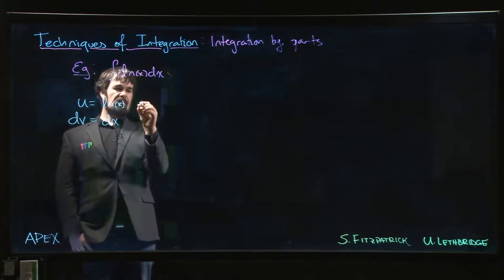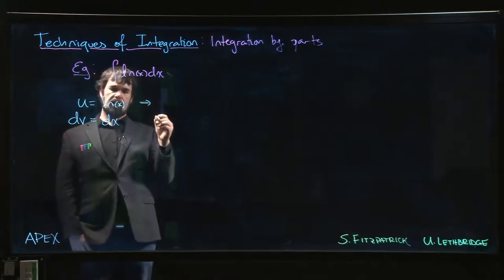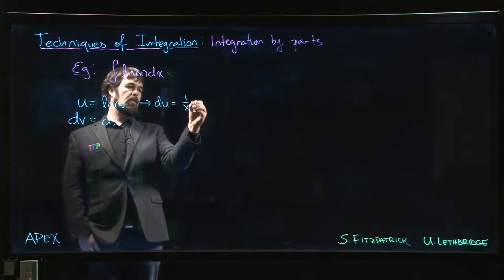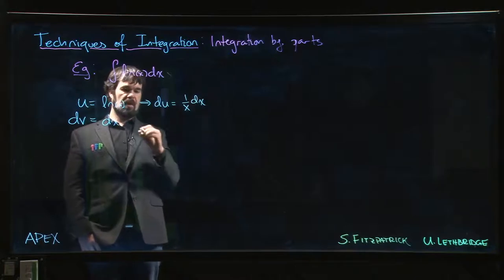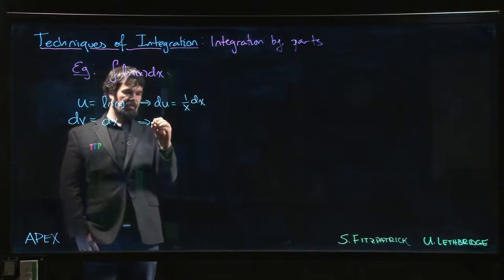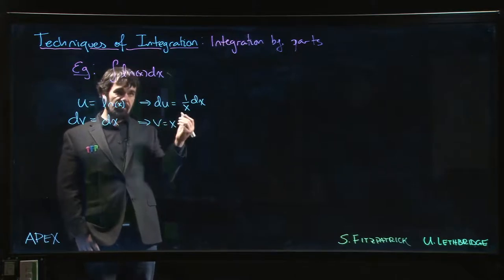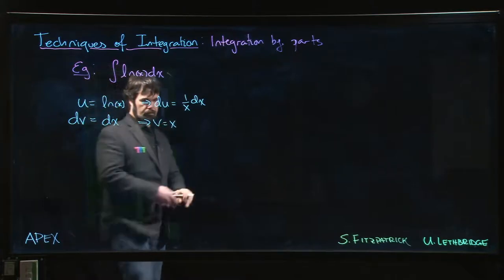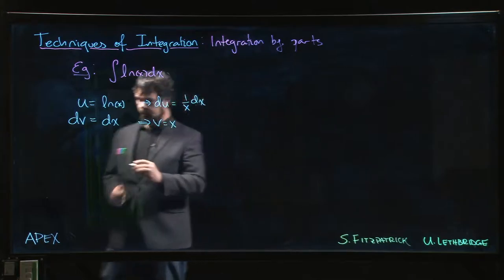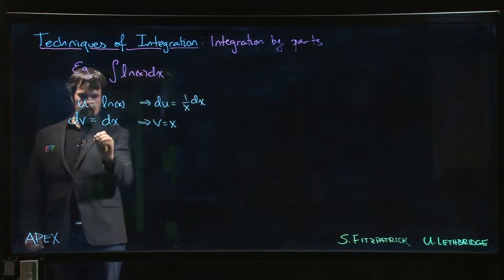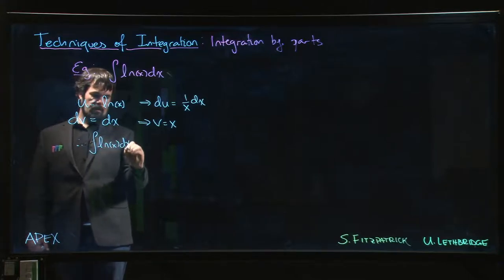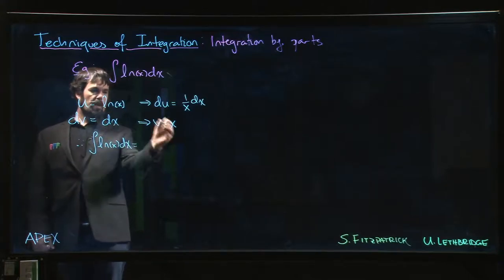Let's see where that gets us. Well, u is the log of X, then du is 1 over X times dx. And if dv is dx, well, v is just X. Okay, so let's put all that together. The integral of the natural log of X will be u times v...